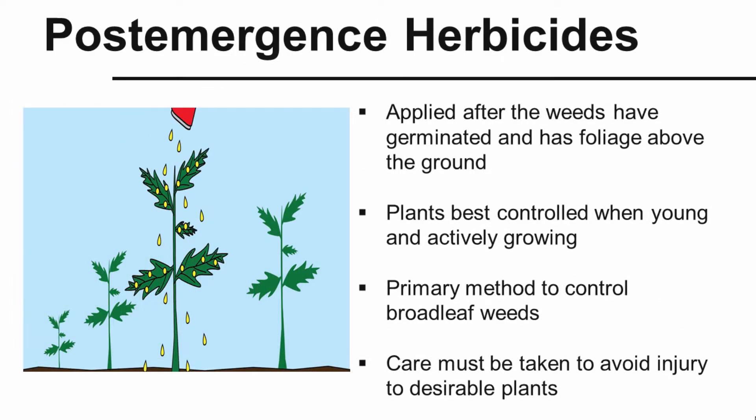With post-emerge herbicides, the weed has already germinated, it's above ground with foliage, and we're trying to kill it after it's emerged from the soil. Plants are best controlled when they're young and actively growing. We typically think of this as the primary method to control broadleaf weeds. Care must be taken to avoid injury to desirable plants, because if that herbicide gets on the foliage of a desirable plant, there's a good chance it will also cause injury.